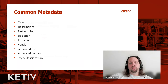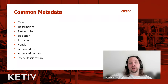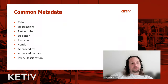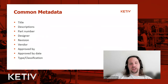Some common metadata: title, description, part number — part number is very important — designer, revision, vendor, and classification. I've been seeing classification pop up more recently. It can be different depending on industry — for example, a classification code that tells you if a part is from the front, back, or middle quadrant of an airplane engine, or whether it's a purchased part versus an in-house manufactured part.